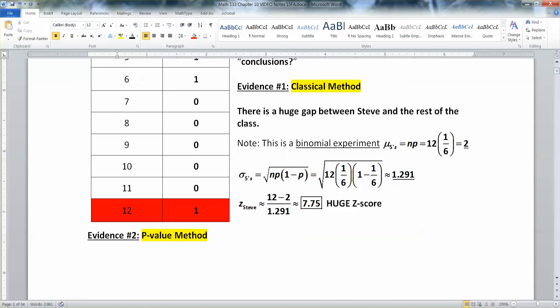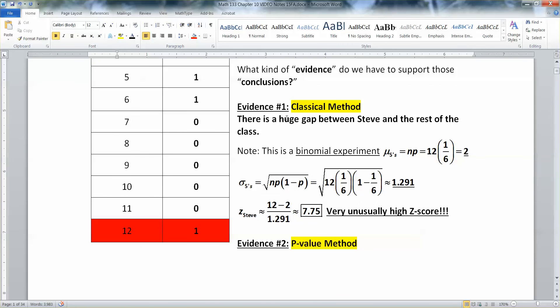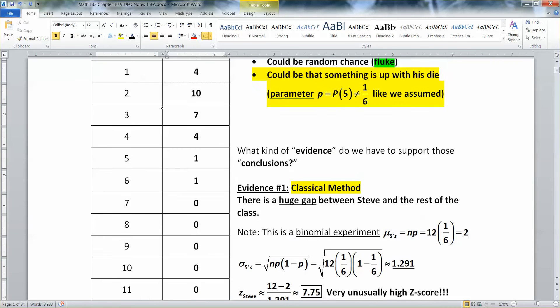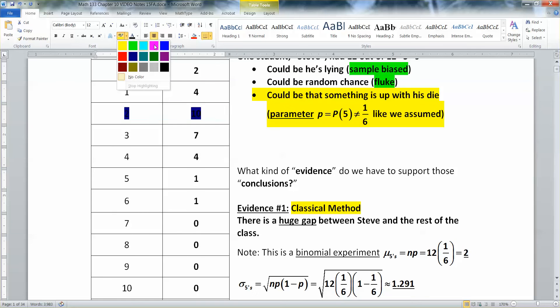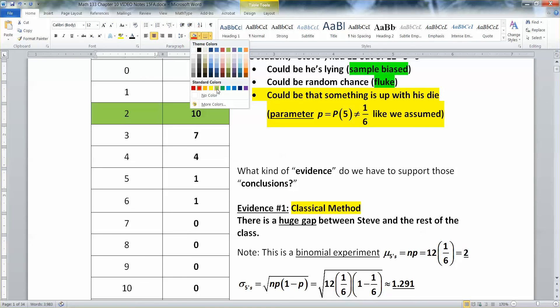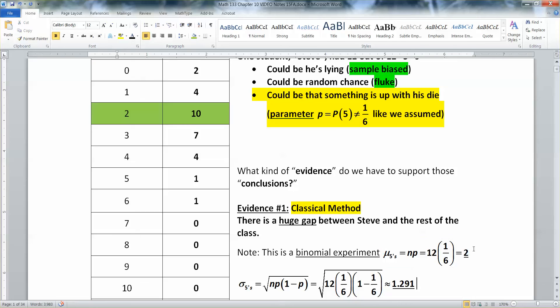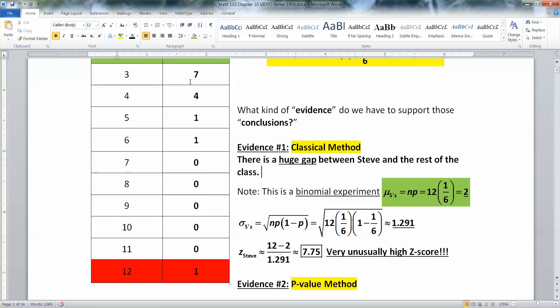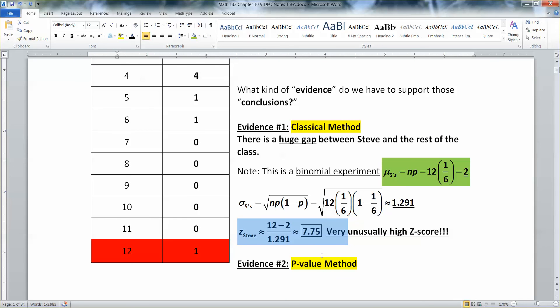Huge Z-score. Very unusually high. A very unusually high Z-score. And then I can get my exclamation points in. So there's a huge gap, and we just proved it. The huge gap comes from his Z-score. He's so many standard deviations away from the mean. The mean is actually right here at 2. So that mean is 2, and he is so far away from the rest of it. As a matter of fact, he's 7.75 standard deviations away from the rest of it. That is crazy high. That is very unusual.